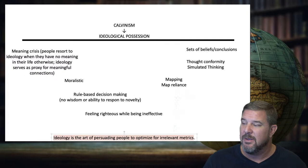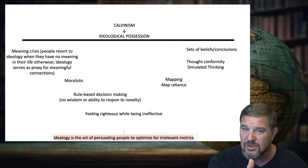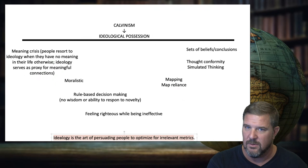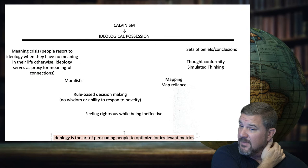Ideology is the art of persuading people to optimize for irrelevant metrics. Whether or not you can convince somebody that something is man-centered is irrelevant to whether it is so or not. If people are optimizing for irrelevant metrics, they're usually moralistic things — calling people evil, wicked, or saying they have an ego.